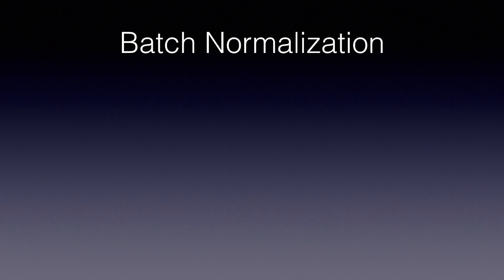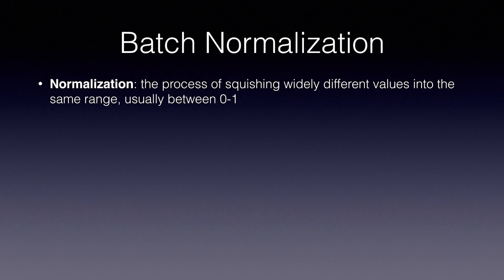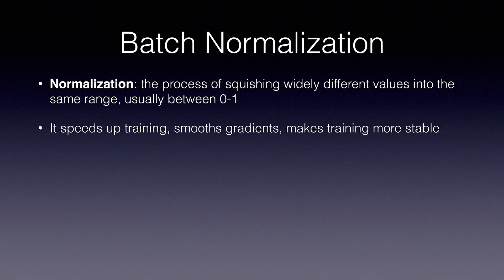The first is Batch Normalization. Normalization refers to the process of squishing widely different values into the same range, usually between 0 and 1. Normalizing input data speeds up training, smooths gradients, and makes the training more stable, meaning you are less likely to get stuck in a local optimum, and the loss is more likely to continuously drop rather than spike all over the place.